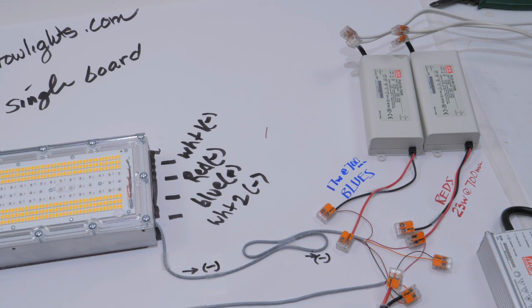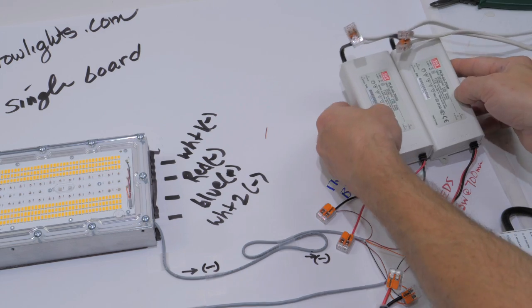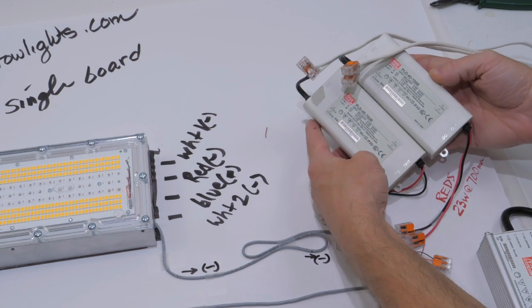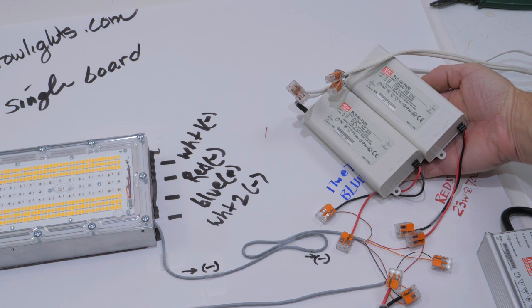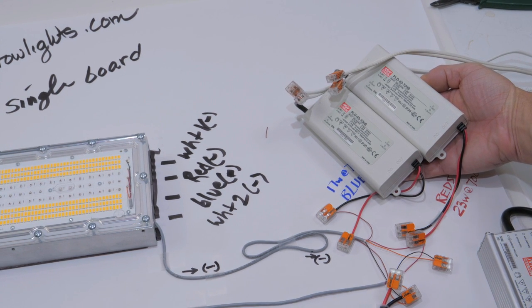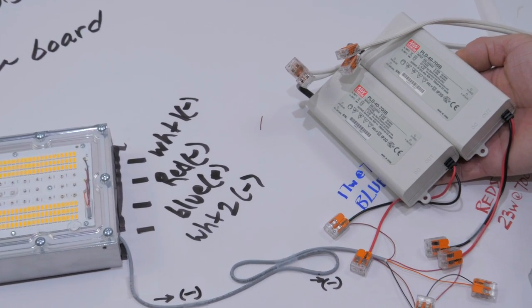Right now I have it wired with just the positive on the left side of the board and the negative on the right side for the red, plugged into one. Same with the blue, and then the whites. I'm going to plug it in and show you how these diodes look and talk about the relative power or photon output of each of the separate channels.